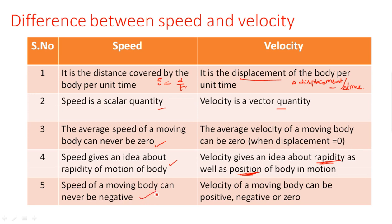Speed of a moving body can never be zero or negative. Velocity of a moving body can be positive, negative, or zero. Since velocity is a vector quantity it includes direction, so it can take positive, negative, or zero values, whereas speed, being a scalar quantity, cannot be zero or negative.